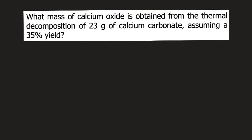This problem is about stoichiometry. When dealing with stoichiometry problems, you should look for a balanced chemical reaction. In our problem, this is the thermal decomposition of calcium carbonate. The reaction is: calcium carbonate, when subjected to heat, decomposes into calcium oxide plus carbon dioxide. If you check, this reaction is already balanced.